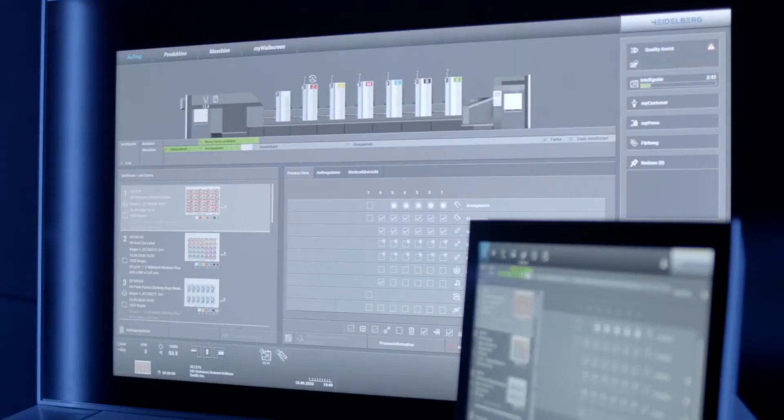With IntelliStart 3, up to 50 job changes can be prepared at the press while production is running. Our patented algorithm automatically determines all the necessary setup processes.